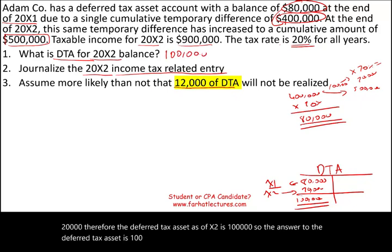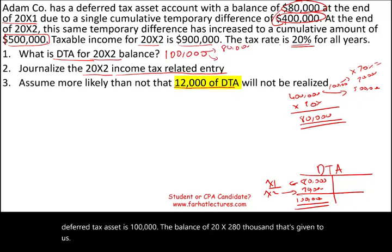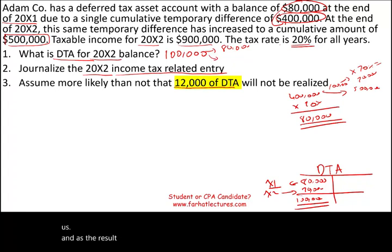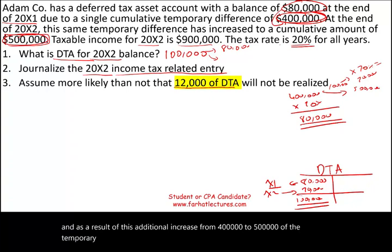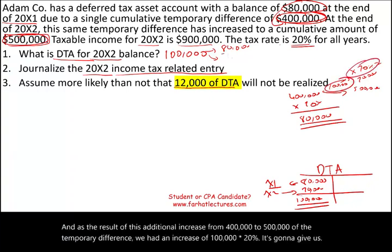The balance of the deferred tax asset as of 20x2 is $100,000: the prior $80,000 plus the additional $20,000 resulting from the $100,000 increase in temporary difference times 20%.